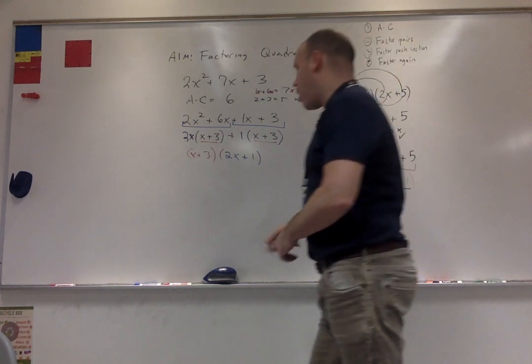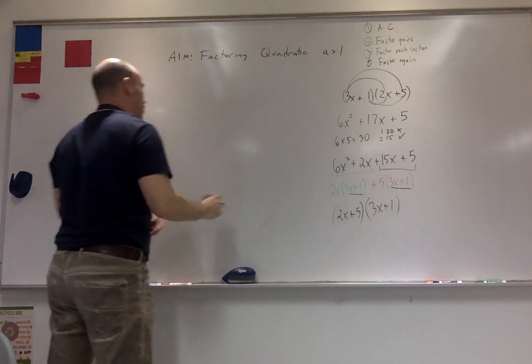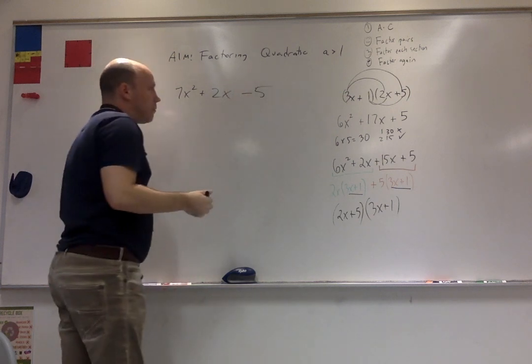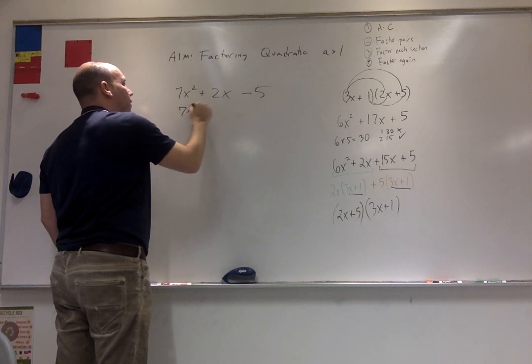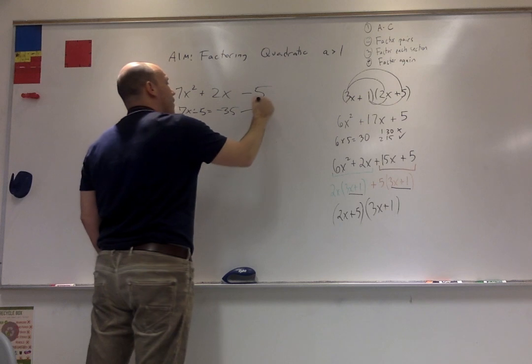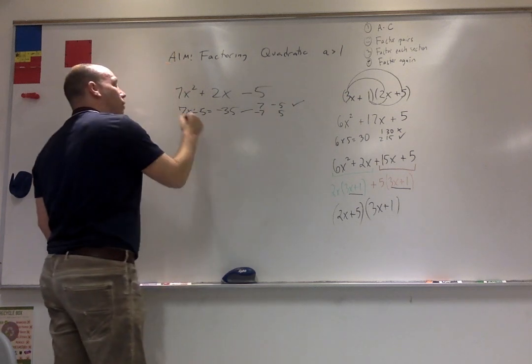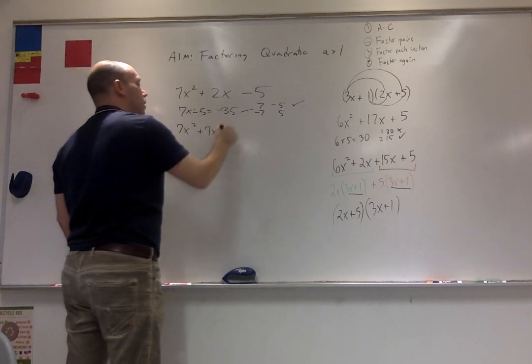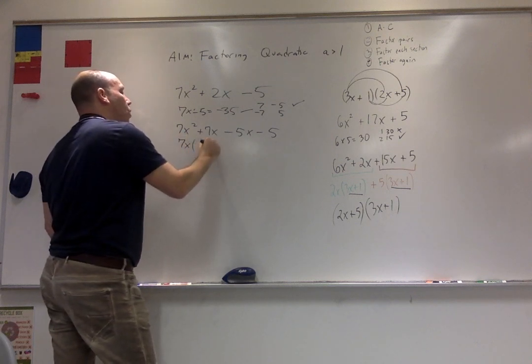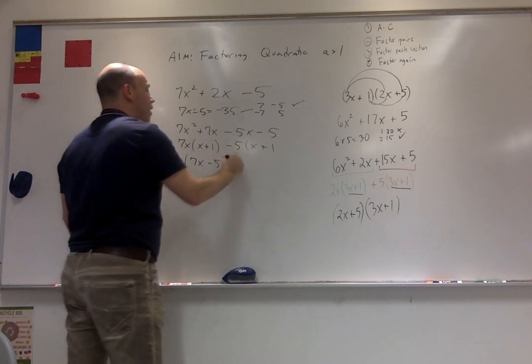So let's try one more problem. How about 7x plus 2x minus 5. So let's see, 7 times negative 5 is 35. This one's easy because I have 5 and negative 5, 7 and negative 5 or negative 7 and positive 5. I have my match here. So I'm going to rewrite this as 7x squared plus 7x minus 5x minus 5. Be very careful. Pull out the 7x, I have x plus 1. Pull out a negative 5, I have x plus 1. Final answer, 7x minus 5 times x plus 1.